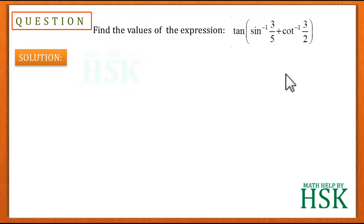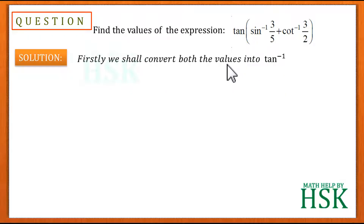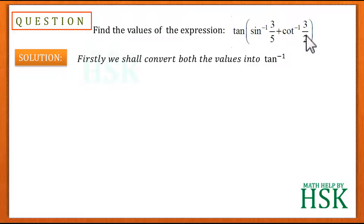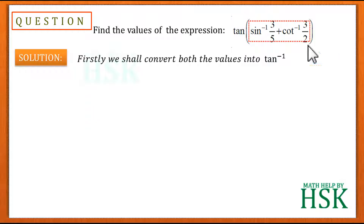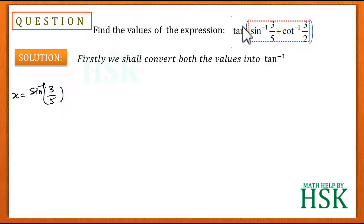To solve this question, we shall first convert both values into tan⁻¹. This is logical because we cannot simplify the expression as it is. Once both values are converted into tan⁻¹, we can combine them into one tan⁻¹ value, which will cancel with the tan written outside the bracket.